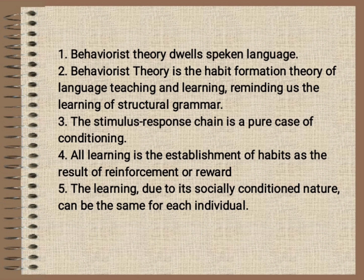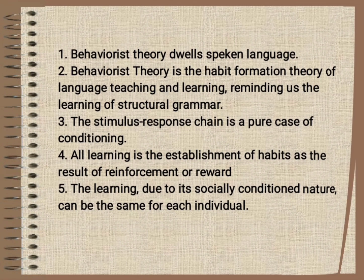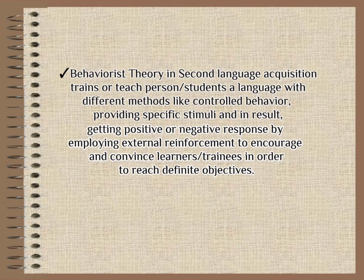Tenet 5: learning, due to its socially conditioned nature, can be the same for each individual. In other words, each person can learn equally if the conditions in which learning takes place are the same for each person. Behaviorist theory in second language acquisition trains or teaches students a language through methods like controlled behavior, providing specific stimuli, and getting positive or negative responses by employing external reinforcement to encourage learners in order to reach definite objectives.